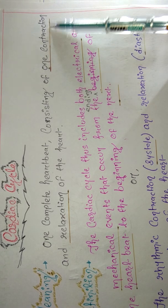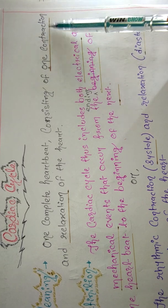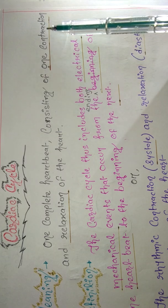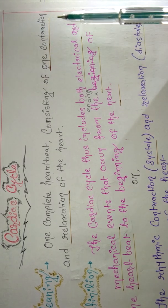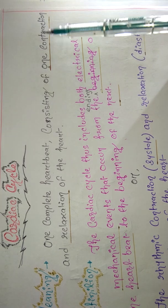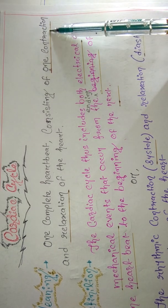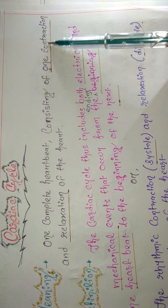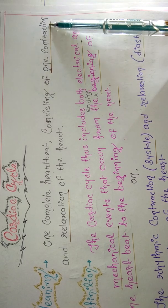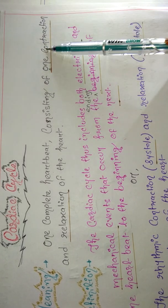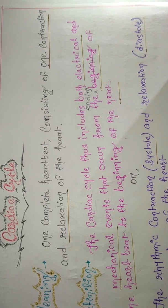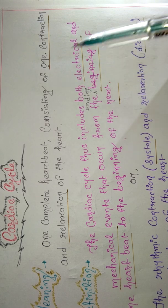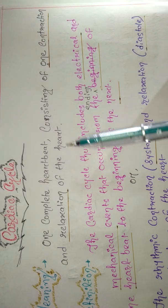Contraction means reducing in size — squeezing. In the cardiac system, when a chamber contracts, blood is pushed out of that chamber. Relaxation means the chamber is filling with blood. So contraction means removing blood and relaxation means filling with blood.